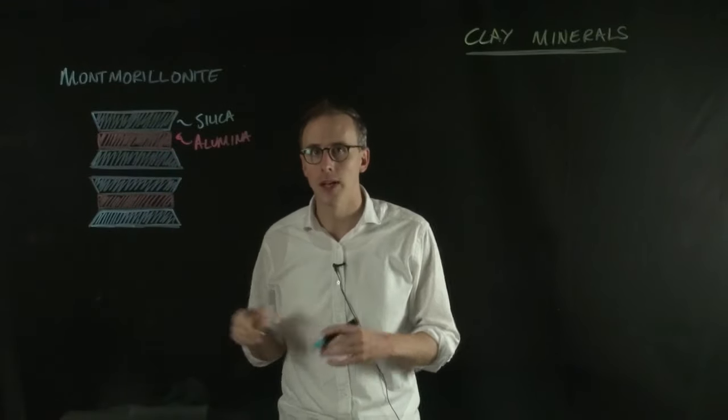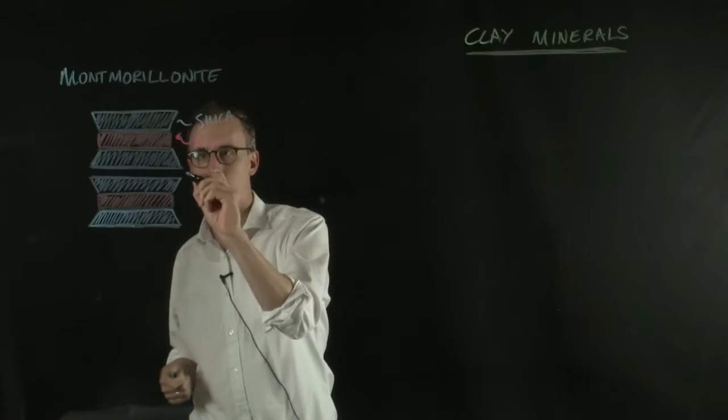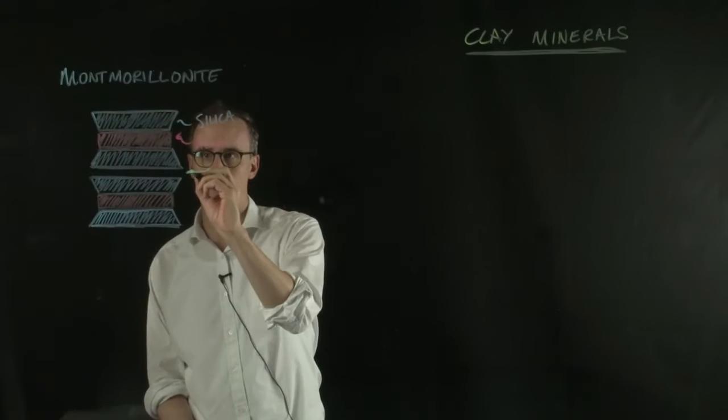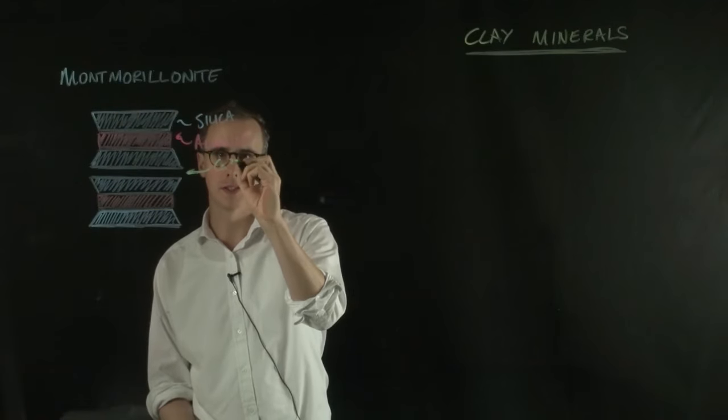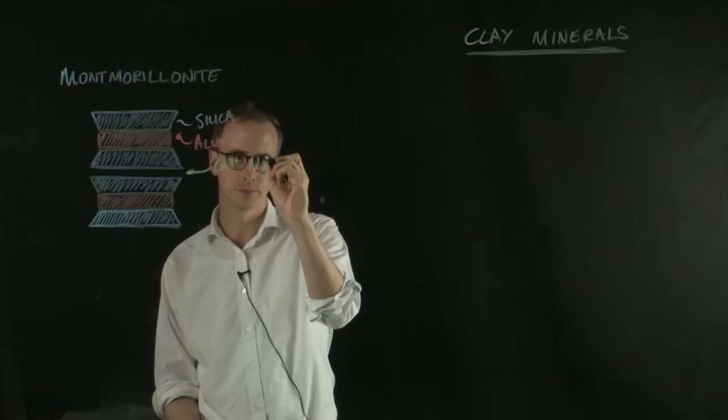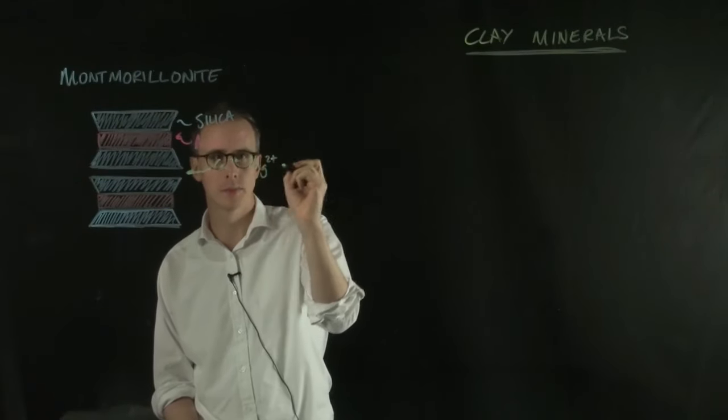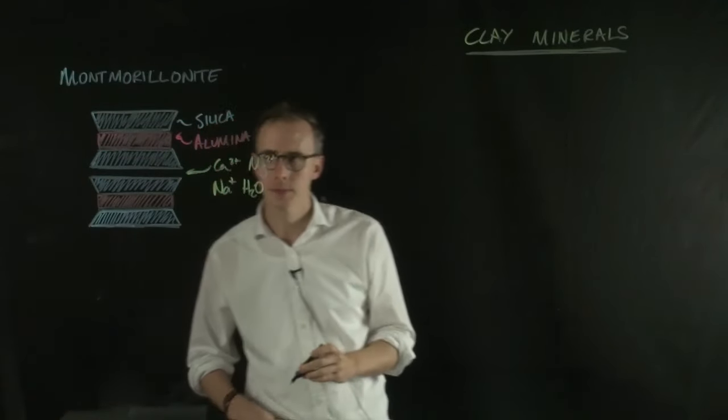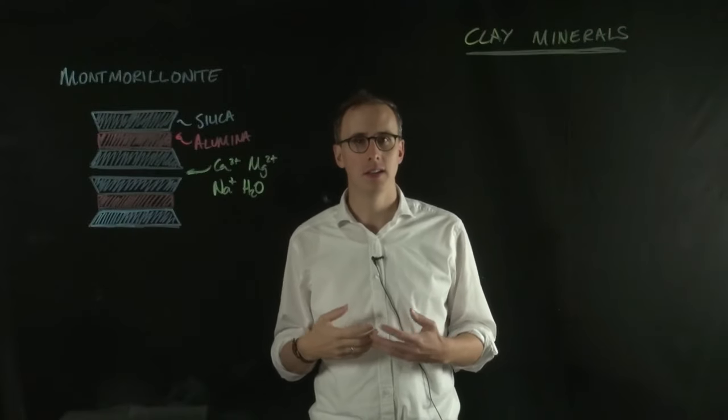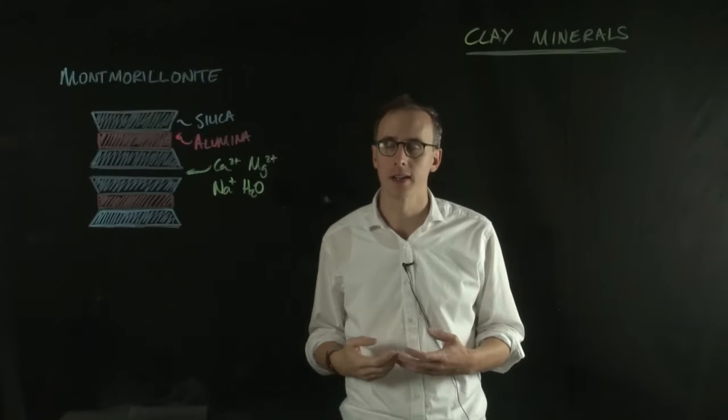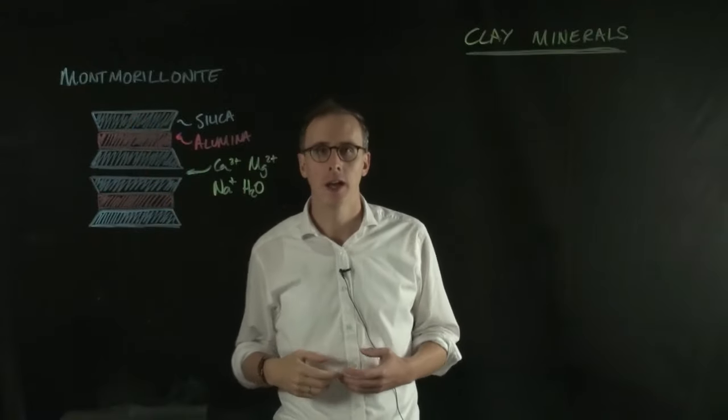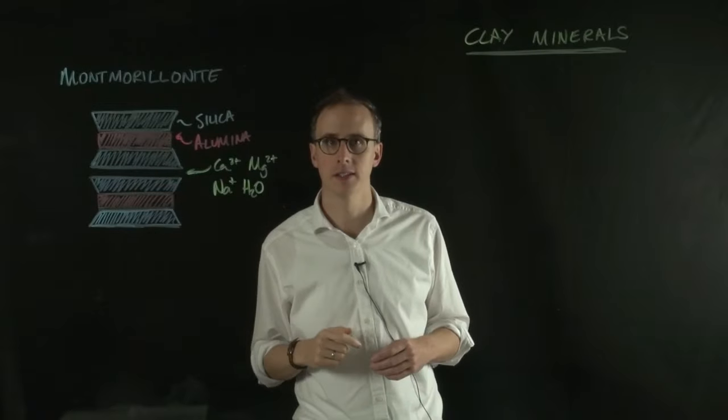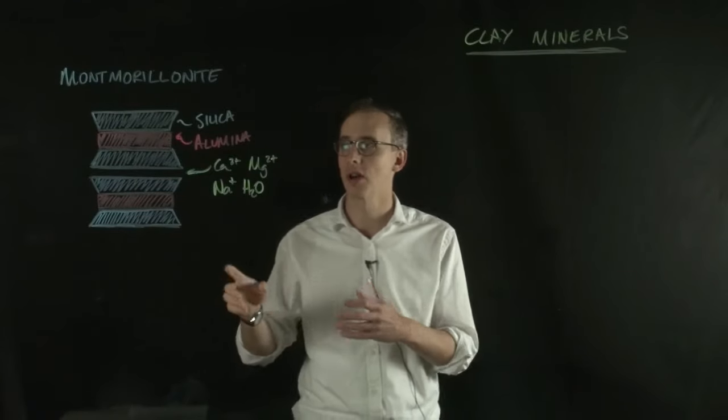Inside that gap, you can have either calcium atoms, magnesium, sodium, or water. The expansive properties that smectite clays have, like montmorillonite, arise because of the relative size of the particle that fits in this interstitial gap relative to its charge.